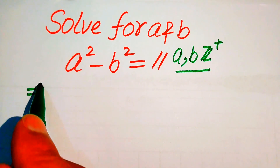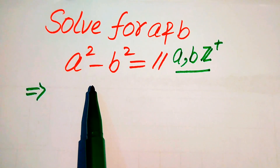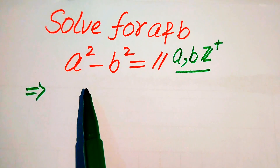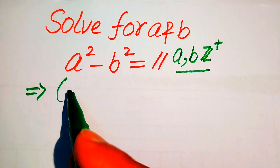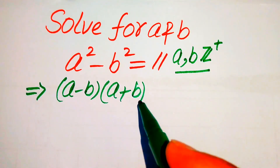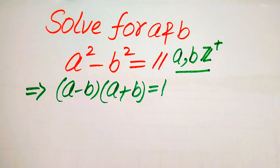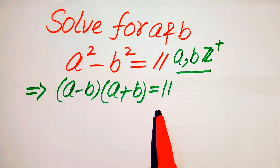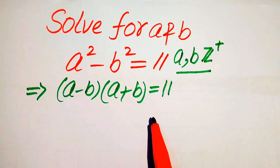The first thing we are going to do is apply the very famous algebraic formula on the left hand side. As you know, a squared minus b squared equals (a minus b) times (a plus b), which equals 11. Now we need to focus on the right hand side — on the left hand side we have two factors multiplied together, so we need to find two positive numbers whose product is 11.